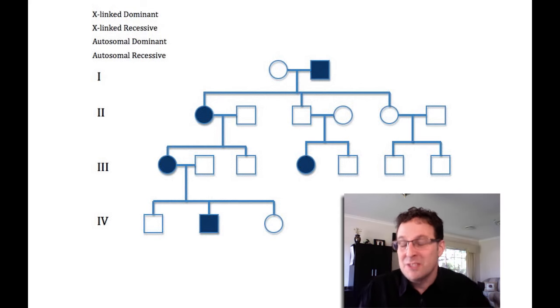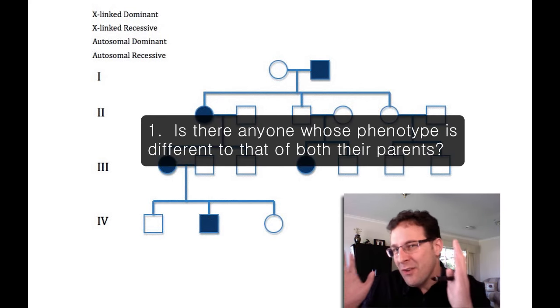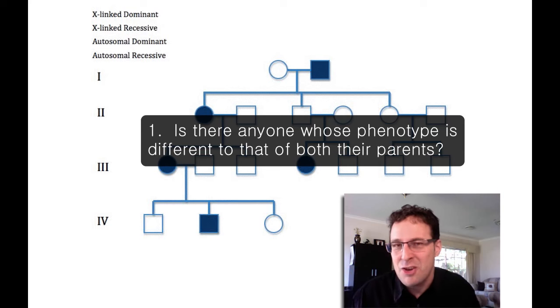The first thing that we need to do is look at the pedigree and say, is there anyone in that pedigree who has a phenotype that's different to the phenotype of both their parents?